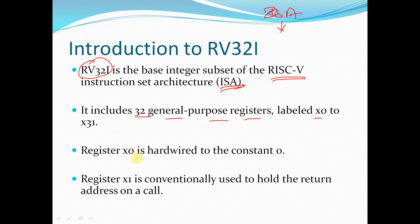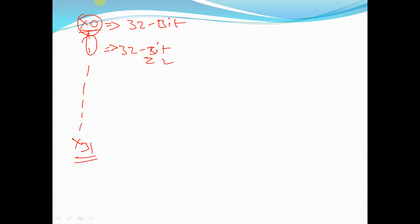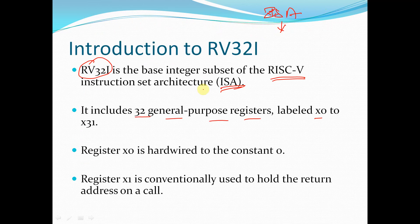Register X0 is hardwired to the constant zero, so all values in this register will always be zero. Register X1 is conventionally used to hold the return address on a function call. We will see the purpose of each register in detail in upcoming slides.